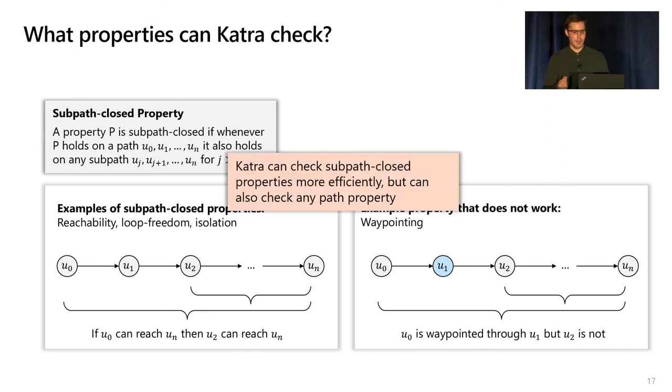What we show is that we can check subpath closed properties very efficiently because we can reuse states in this DFS, but we can also check other properties that are not subpath closed, though it's significantly more expensive to do so.